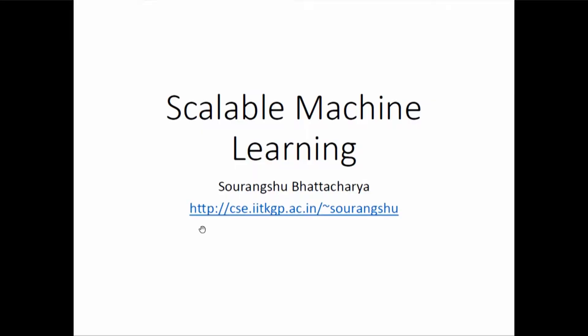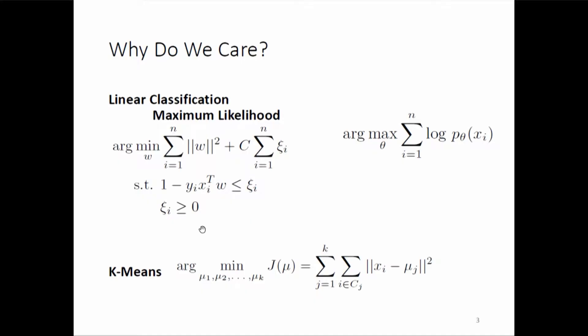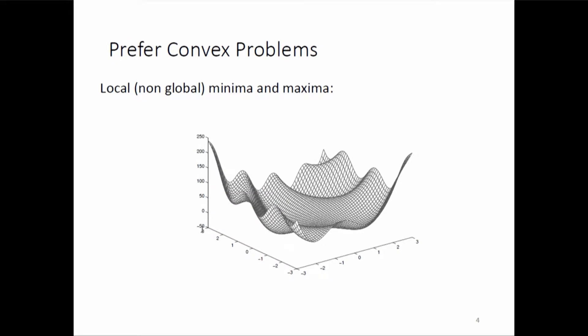The second lecture will be on Scalable Machine Learning. You already have a background on optimization — one of the earlier talks in this school was on optimization. So you know what optimization is, why we care about optimization in machine learning, and what convex optimization is.